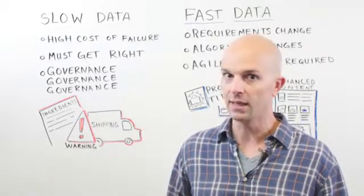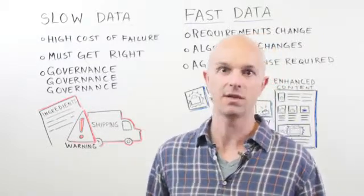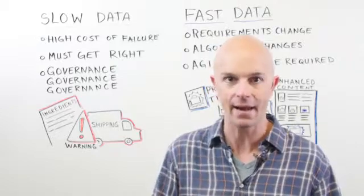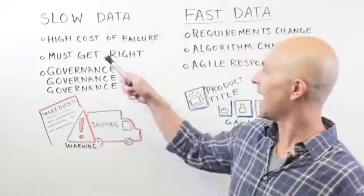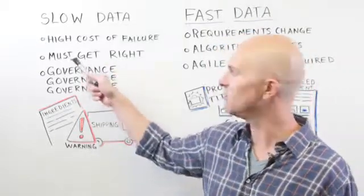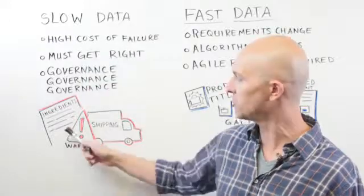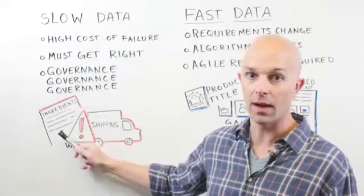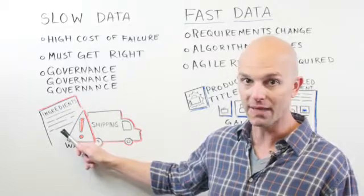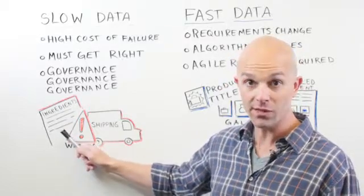Slow data is actually in many ways the most important data in your organization. It's the stuff that you absolutely cannot screw up, right? It's the high cost of failure data. If you get your ingredient information wrong when you put it out on the labels on the products, that can cause you lawsuits, right?